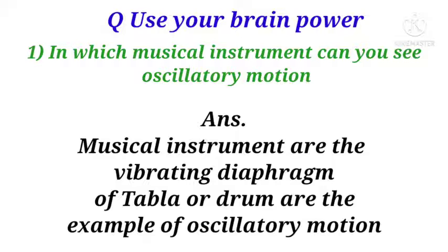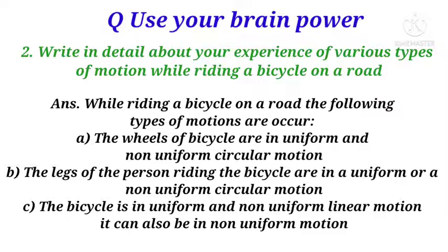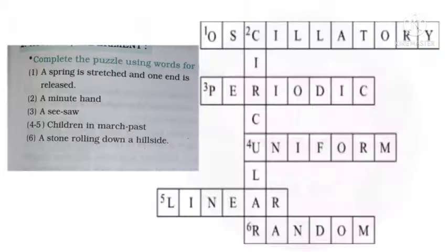Second question: write in details about your experience of various types of motion while riding a bicycle on a road. Which is so common, like wheels of cycles are in uniform, non-uniform, circular motion. Most of the time the circular motion is present in this, so write the answer pointwise properly.